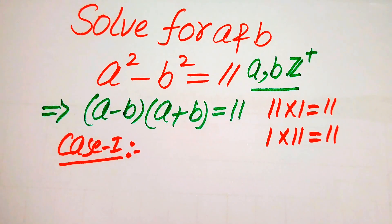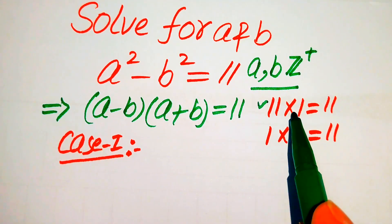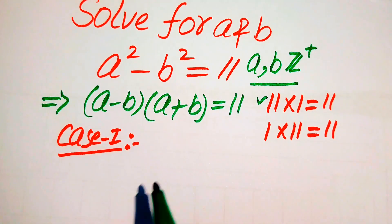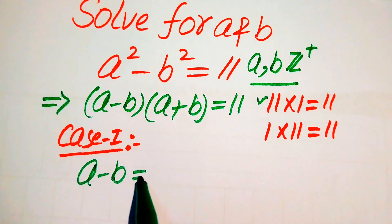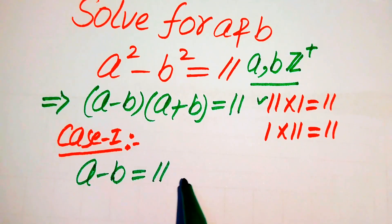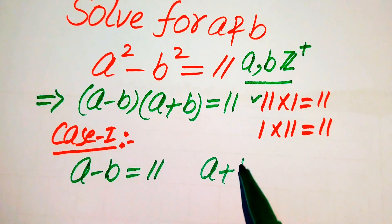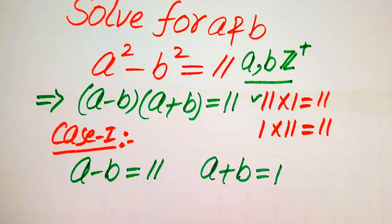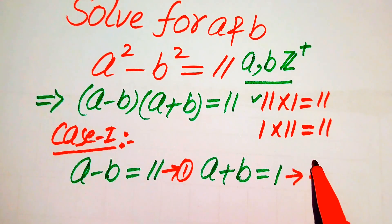In Case 1, we compare the two factors with the numbers 11 and 1. After comparing, we get a minus b equals 11 and a plus b equals 1. We call these equation number 1 and equation number 2.